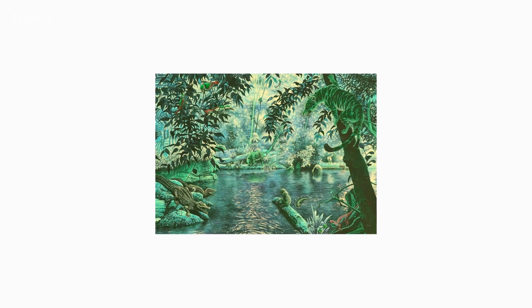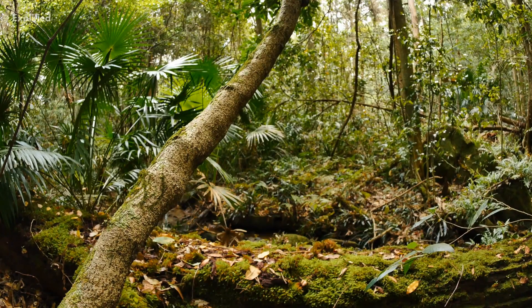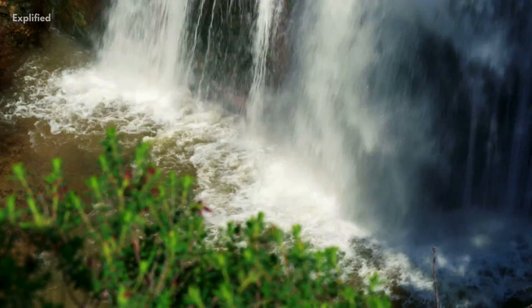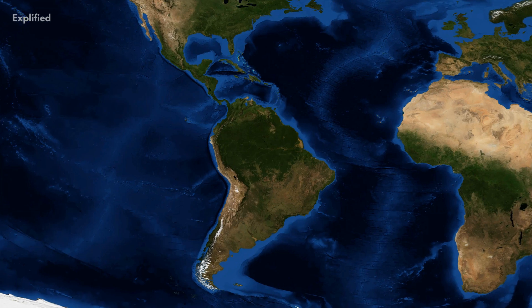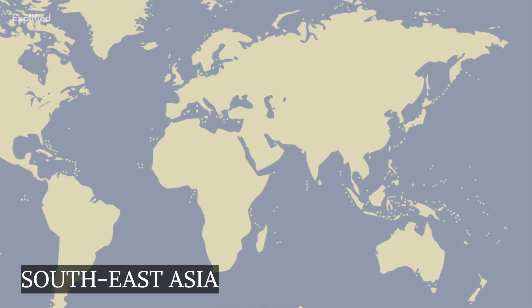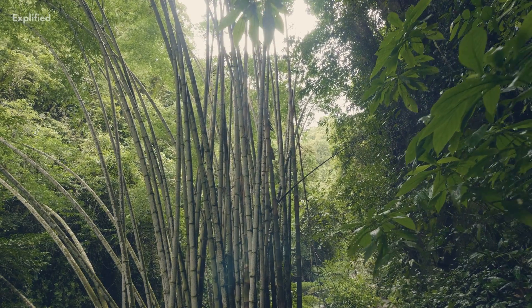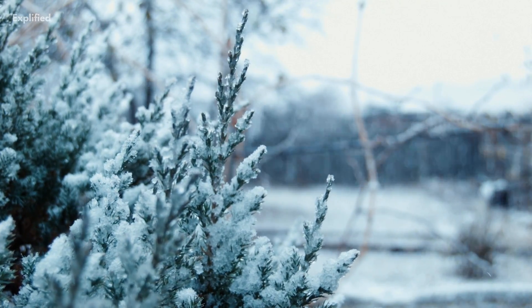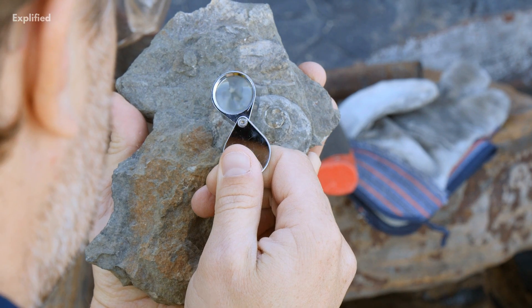During the Ypresian and Lutetian ages, the flora of the planet mostly comprised tropical forests extending across the stretches of the present African continent, both the Americas, and South and Southeast Asia. In Europe and Russia, the flora would mainly be paratropical forests. Plant life was even present in the polar regions.